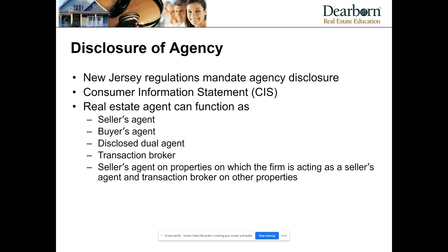Dual disclosed agency must be consented to and disclosed. You cannot have undisclosed and unconsented dual agency — that is illegal. The last way to work with someone in New Jersey is as a transaction broker. A transaction broker works for the deal and does not owe fiduciary responsibilities to either party, but does owe them fair and honest dealing. Some business models are more likely to use transaction brokerage.